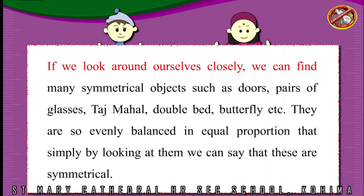If we look around ourselves closely, we can find many symmetrical objects such as doors, pairs of glasses, Taj Mahal, double bed, butterfly, etc.